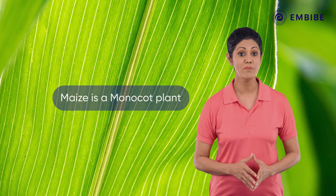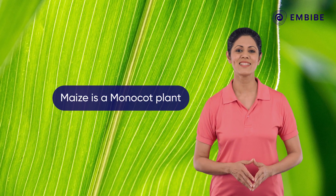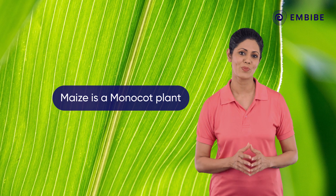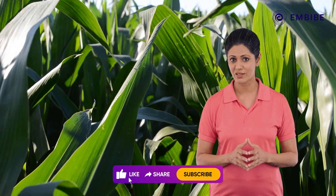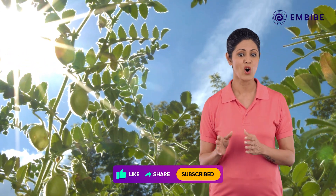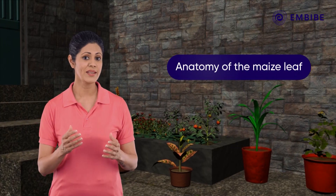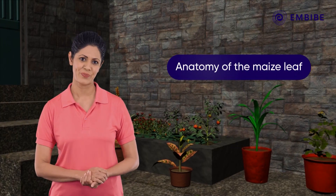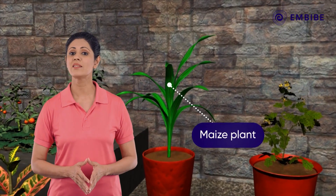Have you ever seen a maize plant? It is an example of a monocot plant. The leaves of this monocot plant differ from the leaves of a dicot plant. Let's study the features of the monocot leaf of a maize plant and how they differ from the leaf of a dicot plant. This topic explains the anatomy of the maize leaf. In a kitchen garden, we can see a maize plant. The main stem of the plant is referred to as the culm.